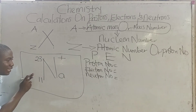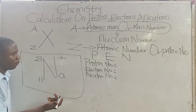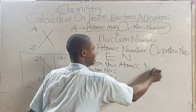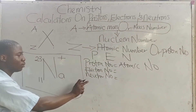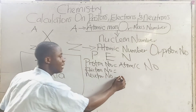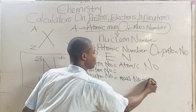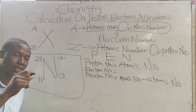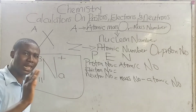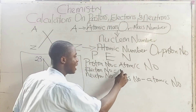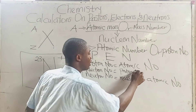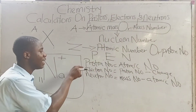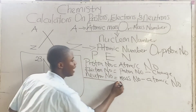For a charged atom, the proton number is still the same as the atomic number — it does not change. The neutron number is still calculated by mass number minus atomic number — that formula does not change either. What actually changes is the electron number. The electron number is gotten by saying: proton number minus charge.